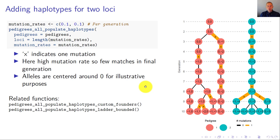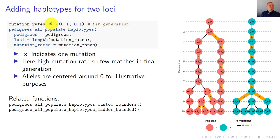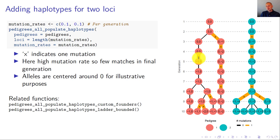We can then add haplotypes. In this small example, I add a two-locus haplotype. I set the mutation rates for each locus — both have a rate of 0.1 (10% per generation), which is fairly high. I call the function pedigrees_all_populate_haplotypes, specifying my pedigrees object, two loci, and the mutation rate vector. The black lines show no mutation occurred; orange lines with a cross indicate a mutation happened. For example, haplotype 0,0 mutated to -1,0.